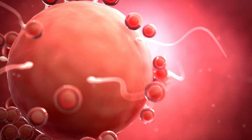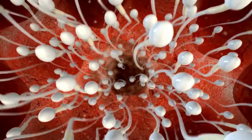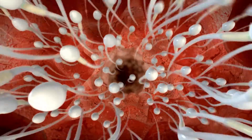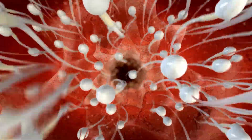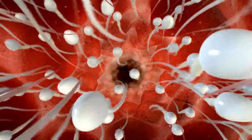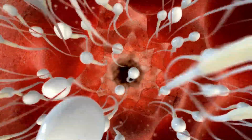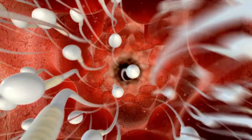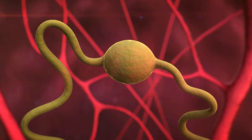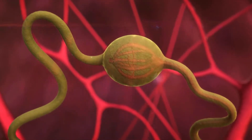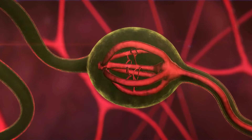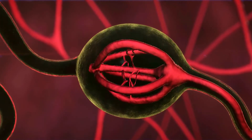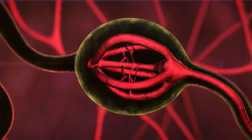When you have unprotected sex, sperm cells swim up through your vagina and into your fallopian tubes. Millions of sperm battle to reach and penetrate the egg, but only one breaks through the egg's outer layer to fertilize it. If sperm doesn't fertilize an egg, the egg dissolves.